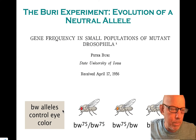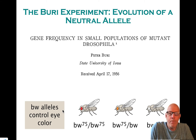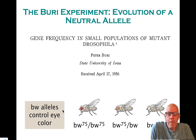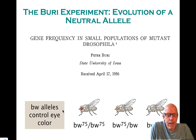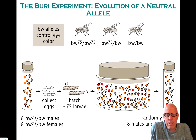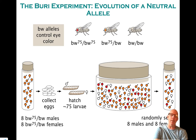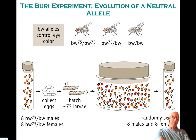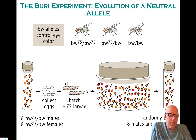I already showed you this earlier, but now we're going to talk about it in actual mathematical detail. Just as a reminder, there was an experiment by Peter Buri done in the 1950s. He started a population with a bunch of orange-eyed heterozygotes — he had eight males and eight females of this phenotype, meaning orange-eyed. He allowed them to mate, then collected eggs, and created a new vial in the next generation selected randomly with eight males and eight females again. As you can see, the number of oranges has gone down, and the number of whites and reds has gone up.